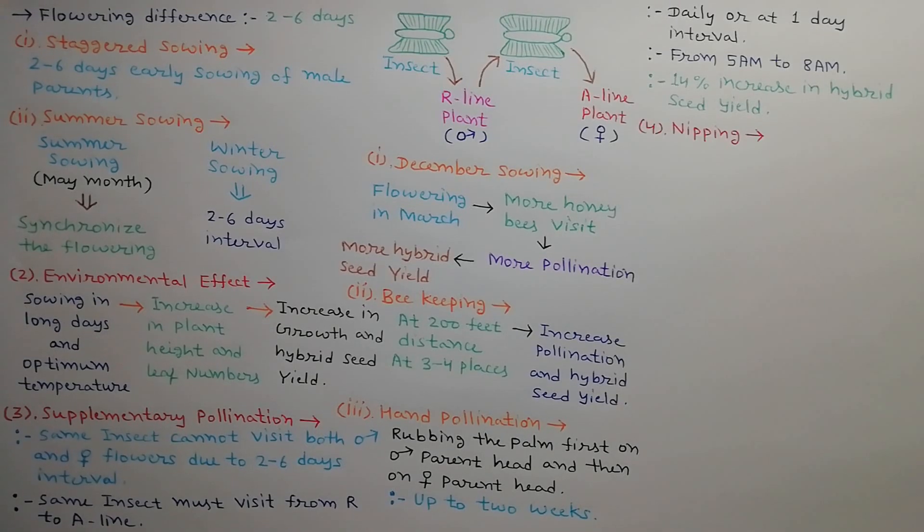Fourth is nipping. Axillary flowering occurs in summer season due to high light intensity. These axillary buds consume nutrients. As a result, main terminal heads cannot develop with full potential which decreases the hybrid seed yield. Hence axillary buds must be removed. This process is called nipping.